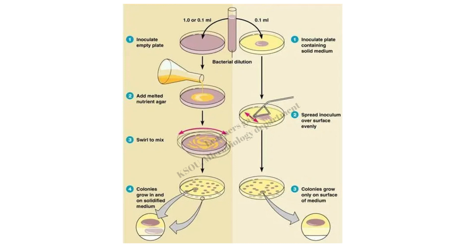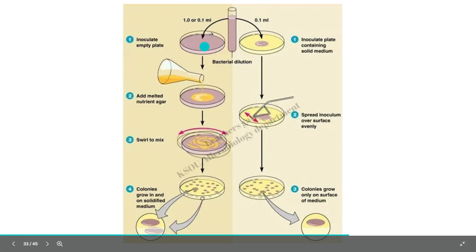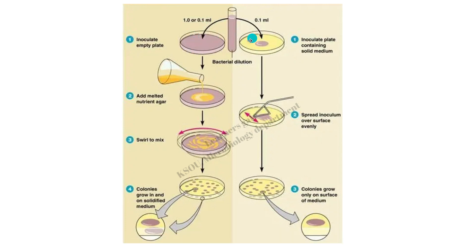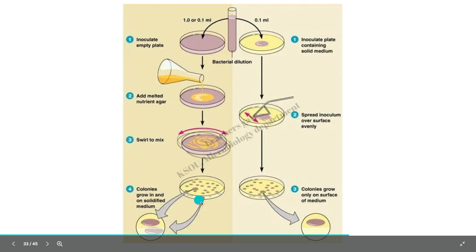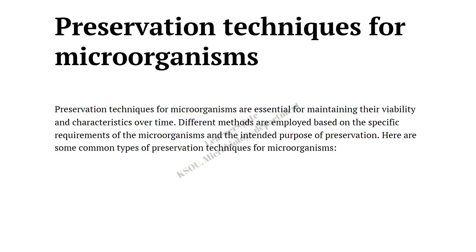The key difference between pour plate and spread plate: in pour plate the sample is added first, then the media is added and mixed, so colonies grow both above and below the agar surface. In spread plate the media is added and solidified first, then the sample is added, so colonies grow only on the surface. So now we have covered the different methods used to isolate pure culture, including serial dilution and spread plate and pour plate.